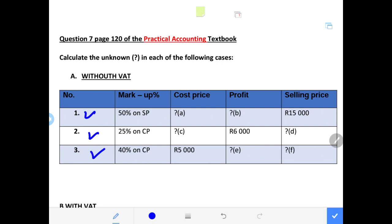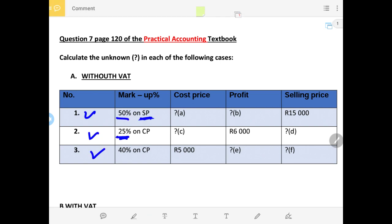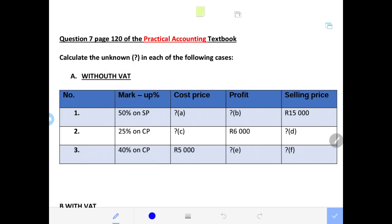We have number one, number two, number three. We have different markup percentages: one is 50% on the selling price, another is 25% on the cost price. The third one I don't necessarily have to do — only the two are necessary — but I will explain why. You can use the third one for practice. This also involves markup percentage on cost price, and we also need to be able to calculate the markup percentage when it is not given. I will also bring some question marks on the markup percentage.